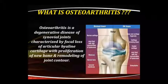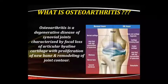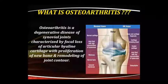Now, what is osteoarthritis? It is a degenerative disease which is characterized by gradual degradation of the joint structure of the weight-bearing joints. It is a degenerative joint disease, more commonly seen in elderly women.